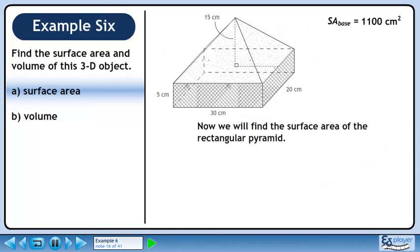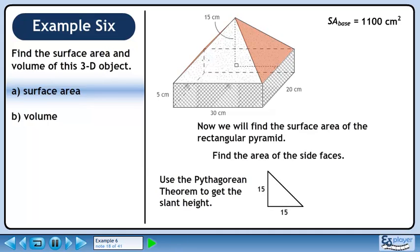Now we will find the surface area of the rectangular pyramid. Find the area of the side faces. Use the Pythagorean theorem to get the slant height. Start with a² + b² = c².